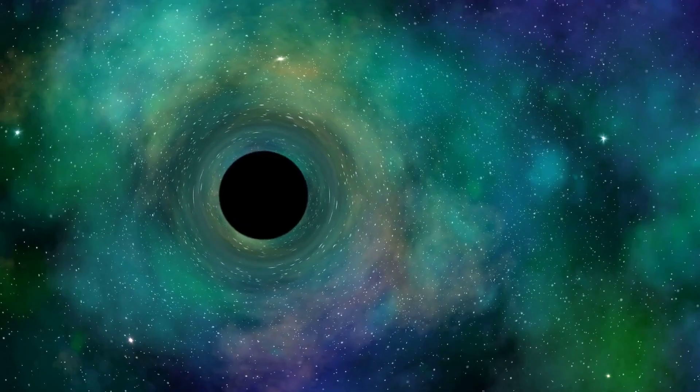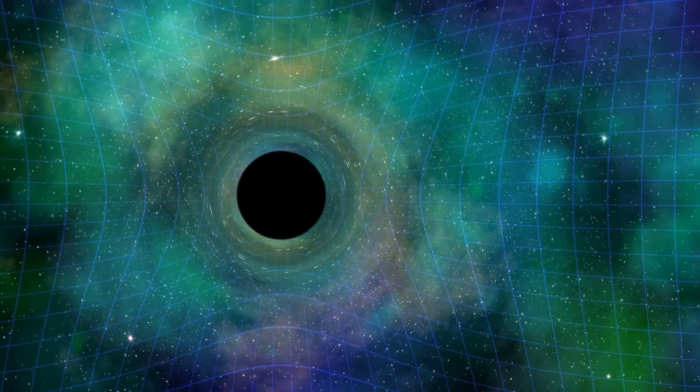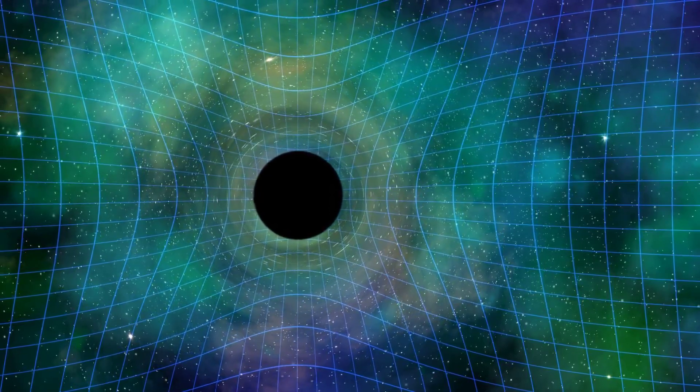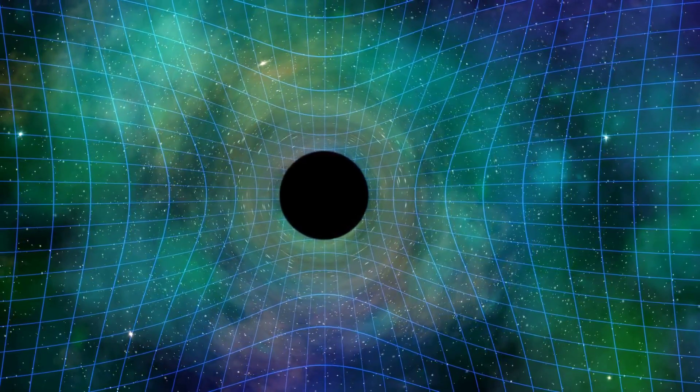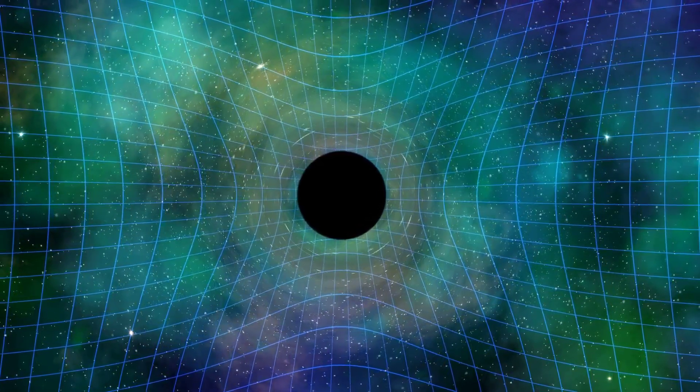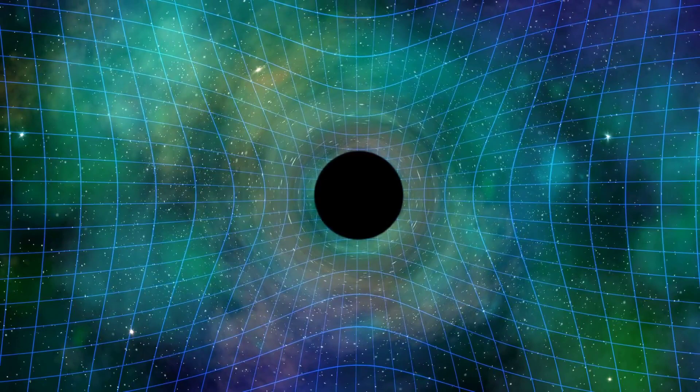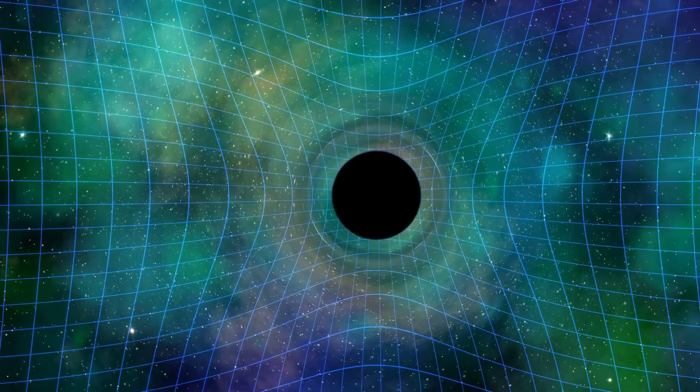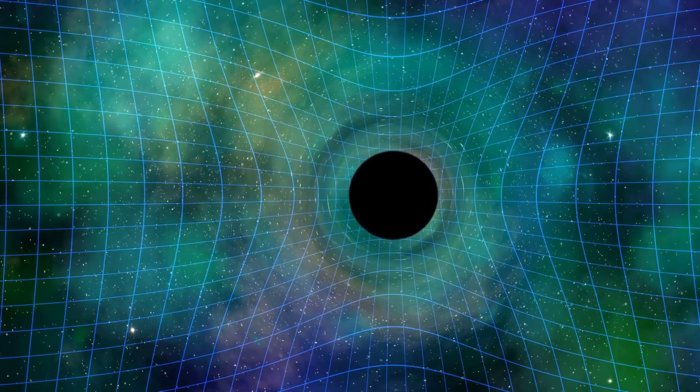This theory predicted the existence of singularities in the fabric of space-time, regions where the density of matter becomes infinite. However, the terminology black hole only became popular in the 1960s. Before that, they were referred to as collapsed stars or collapsing objects.